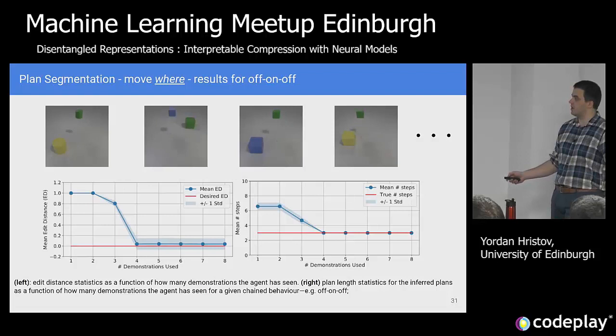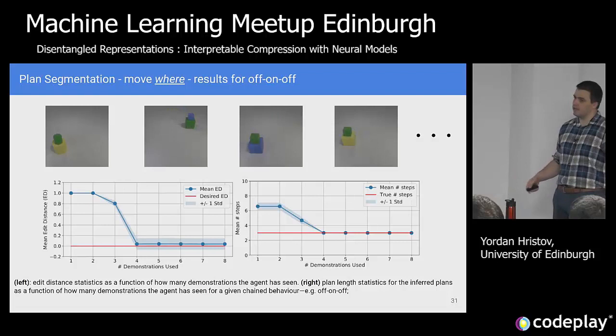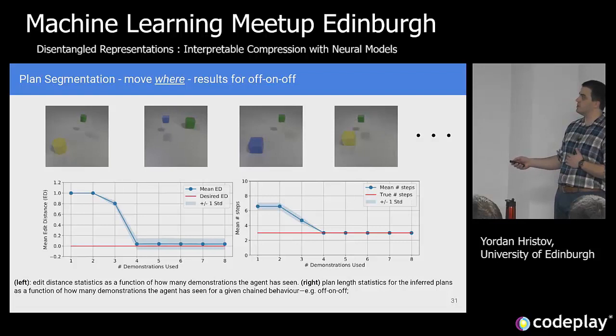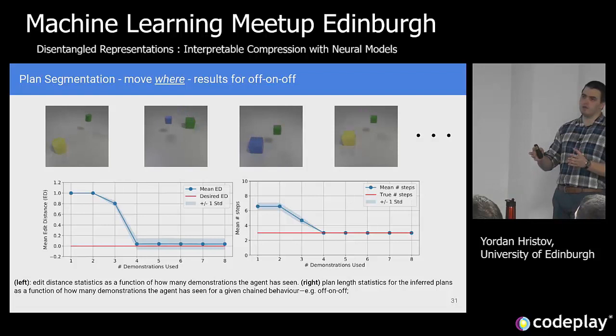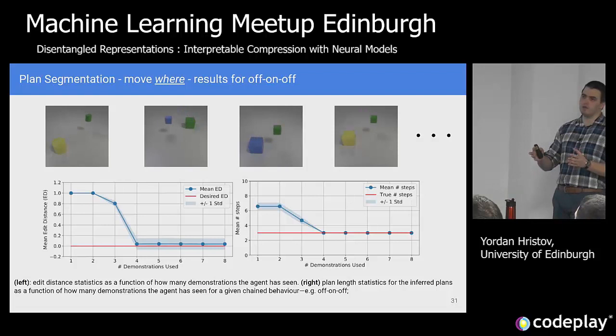The edit distance between inferred plans and ground-truth plans is our metric, and the more observations the model has, the closer it is to the real plan. It infers a plan for demo one, two, three, four and tries to take the most invariant information that still explains the demonstrations.